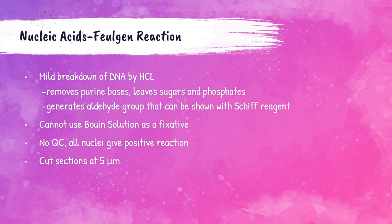The Feulgen reaction is used for staining DNA. Hydrochloric acid mildly hydrolyzes DNA and removes the purine bases from the DNA molecule, leaving sugars and phosphates intact. This creates an aldehyde group that can be shown with the Schiff reagent. Any fixative can be used except Bouin's fixative, as the Bouin's solution breaks down the nuclei during fixation. A quality control section is not needed because all nuclei will give a positive reaction. Tissue sections should be cut to 5 microns.